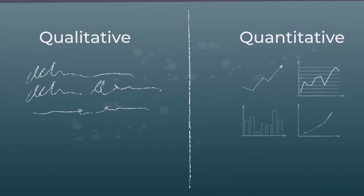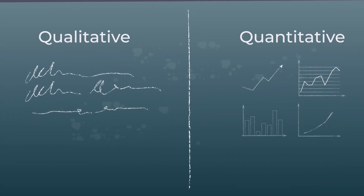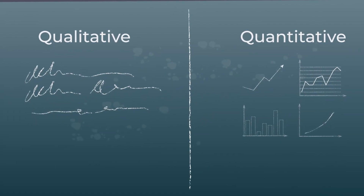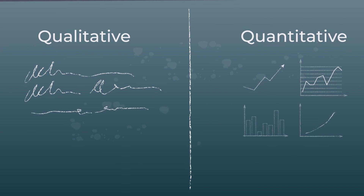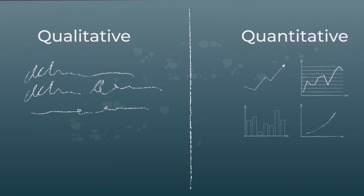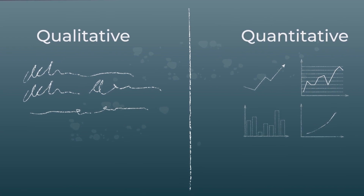Let's start by looking at these two main categories of data analysis, what kind of data you can expect to find, and what kinds of things they can be used for.